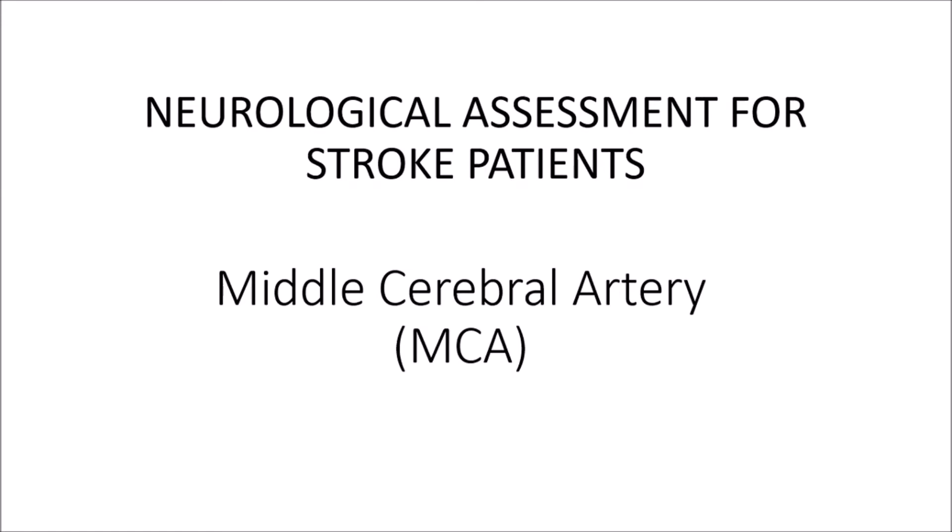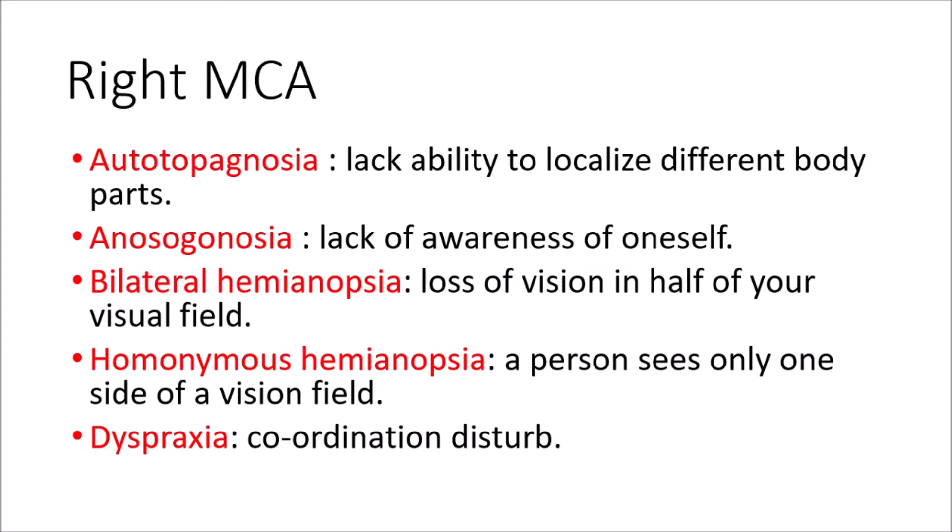The middle cerebral artery supplies your frontal lobe, the lateral part, your temporal lobe, and basically the upper parietal lobe. There are different signs and symptoms associated with the MCA which can differentiate right and left. So there are different signs and symptoms for the right MCA and the left MCA. The right MCA supplies your frontal, lateral temporal, and parietal lobe. The first sign is autotopagnosia.